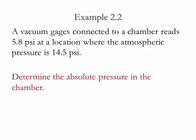Example 2.2. In this example, a vacuum gauge is connected to a chamber which reads 5.8 PSI, and at this location, the atmospheric pressure is equal to 14.5 PSI. The goal of the problem is to determine the value of the absolute pressure in the chamber.